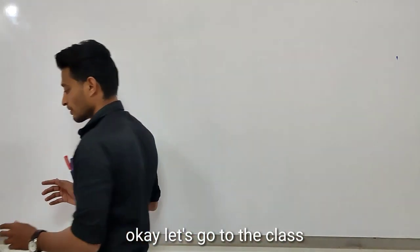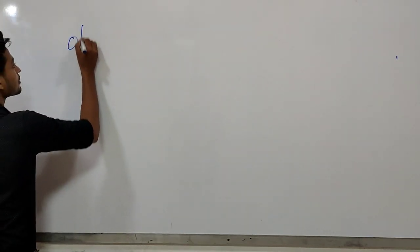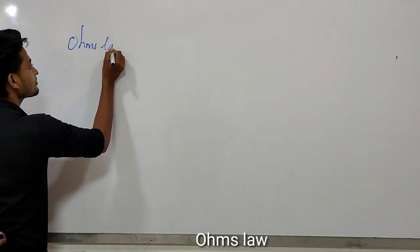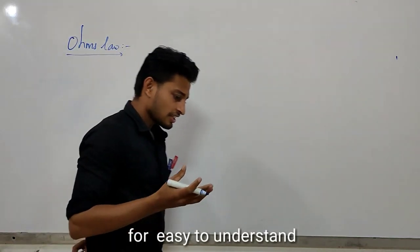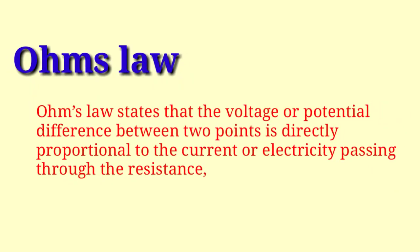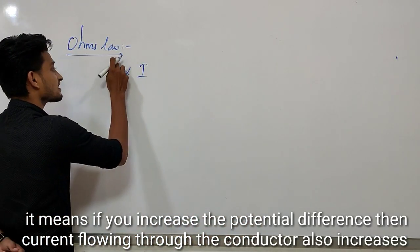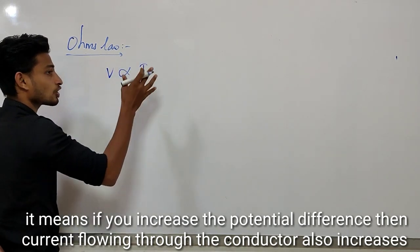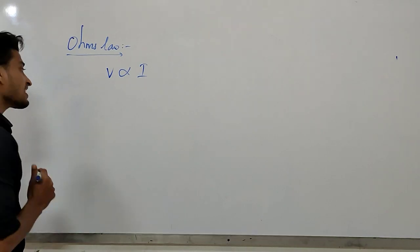The first one is Ohm's Law. I'm going to give you a definition: the potential difference between two points is directly proportional to the current passing through the conductor, or the resistance. The potential difference increases as the current increases. Let's check how to verify this.